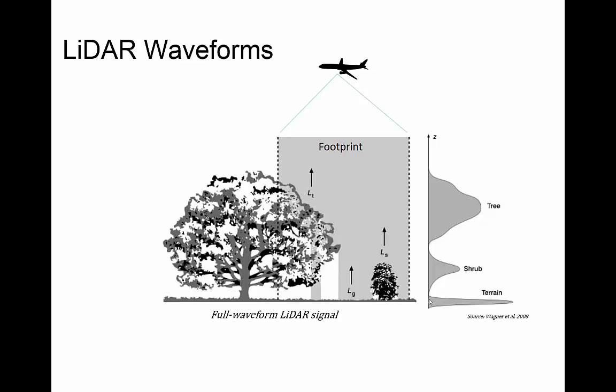Two important things to remember: first, it's full waveform — you don't start off with points, those points are derived from the full waveform data. Second, the vertical axis represents time from shortly after the signal was emitted by the plane to a longer time after. We convert that to height above the ground surface using knowledge of the plane's altitude and the fact that the speed of light is constant — so if we know how long it takes a photon to travel to and back from an object, we can work out how far that object was from the airplane.